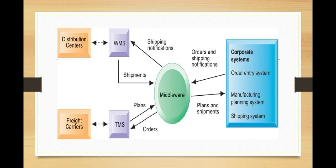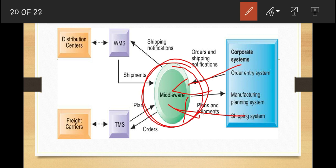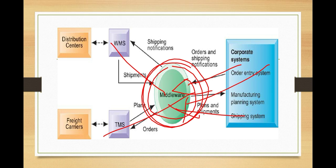An example of a supply chain management system shows customer orders, shipping notifications, optimized shipping plans, and other supply chain information flowing among a warehouse management system and transport management system, connected to a back-end corporate system. A middleware layer connects all these systems — the warehouse management system and the corporate system — centralizing orders so that all systems can communicate together.